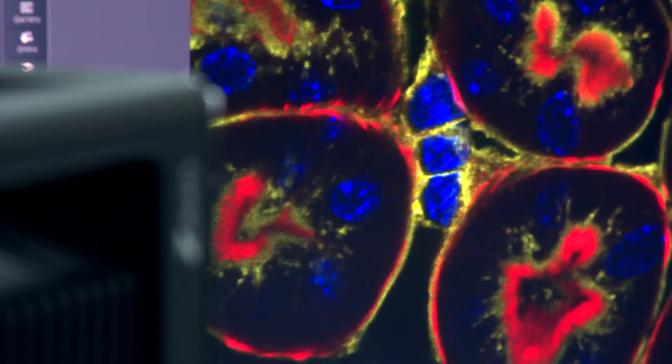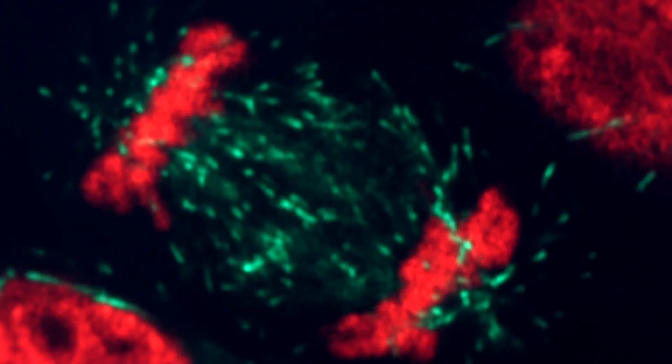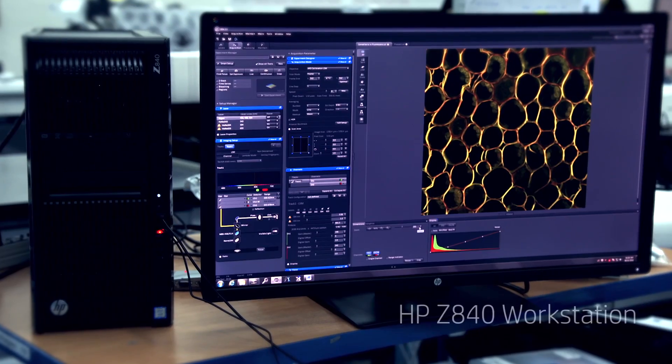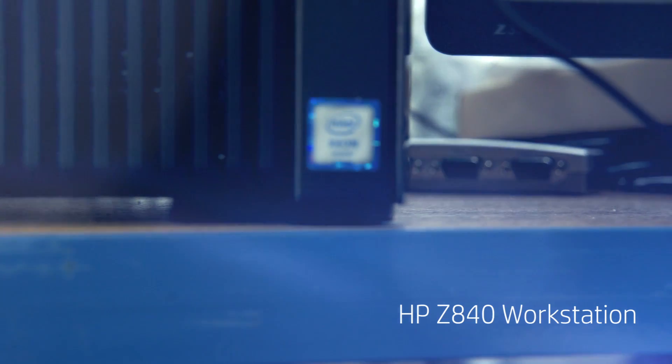The HP-Z workstation does two main things for us. Firstly, it deals with the control, the real-time control of the system. Secondly, it captures images, analyzes them for the customer, everything to do with processors. The HP-Z workstation does it all with its Intel Xeon processor.